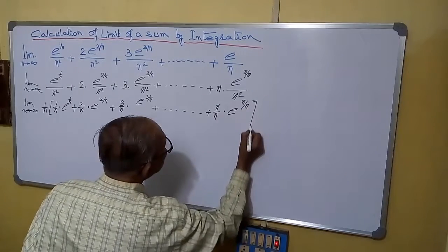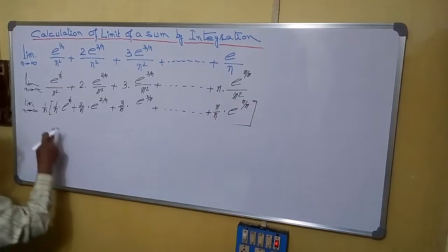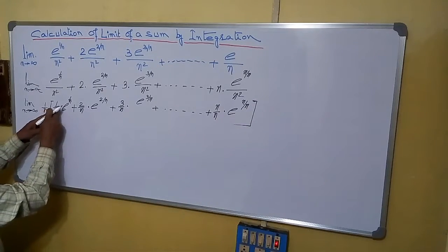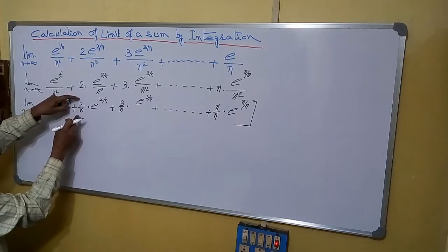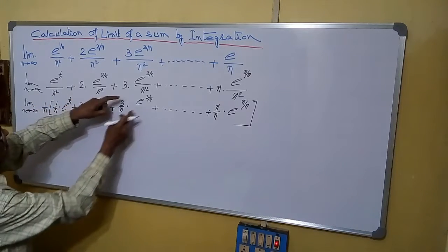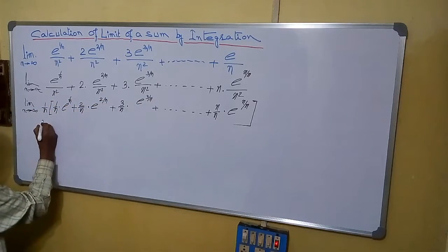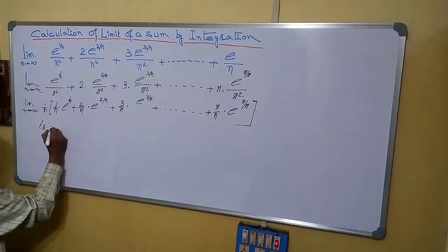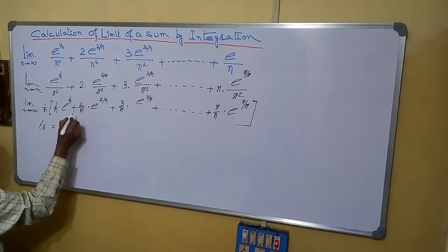So if we are seeing this one, first term we can say 1/n and 1/n, second term 2/n, 2/n, third term 3/n, 3/n. So TR equals to what we can say? R/n·e^(R/n).